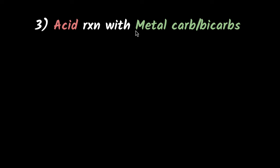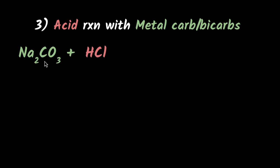What happens when acids react with metal carbonates or bicarbonates? You have sodium carbonate reacting with HCl. Just like before, HCl is going to donate its H+ ions. That H+ ion can now combine with CO₃. We can get carbon dioxide, and we can get water because the O can combine with H. And Na can combine with Cl to get sodium chloride. So we get sodium chloride, carbon dioxide, and water.